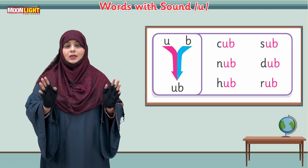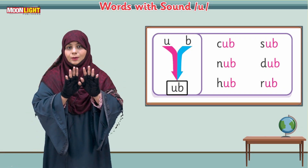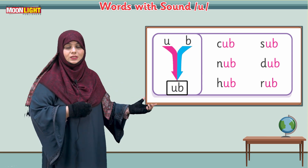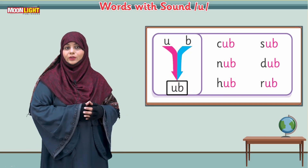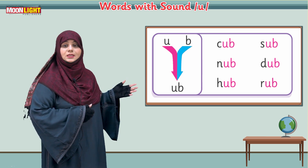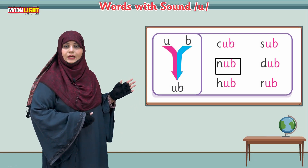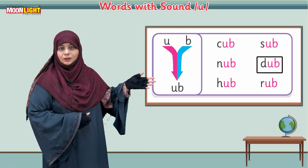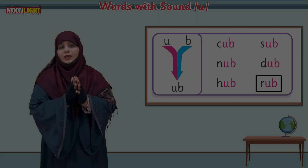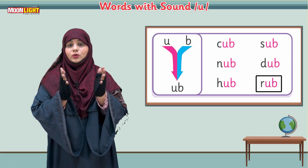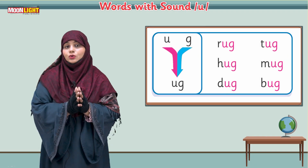This is 'ub' sound — u-b: 'ub.' You can see here, this is the 'ub' sound. Now all of you read with me: cub, sub, tub, dub, hub, rub. These were the words which we made with the 'ub' sound. Now we are going to join the letter U with another letter.